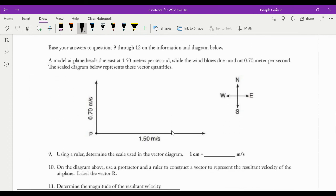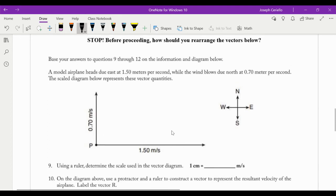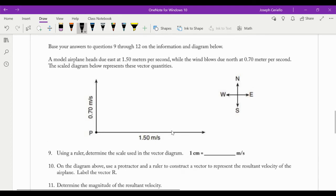All right, let's finish up here with this last one. So it says stop. Before proceeding, how should you rearrange the vectors below? So before I do anything, I know immediately I have to move one of these. I'm going to move, doesn't really matter which one you move, honestly. I'm going to move this bottom one. So it's tip to tail now with this one. And it's the same length, same direction, 1.5 meters per second.